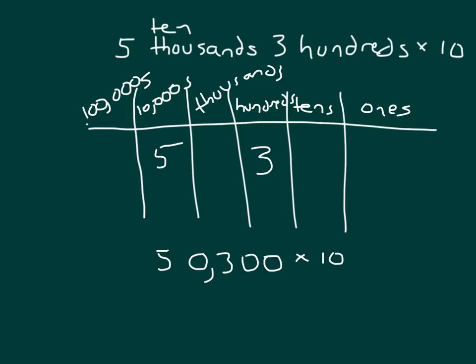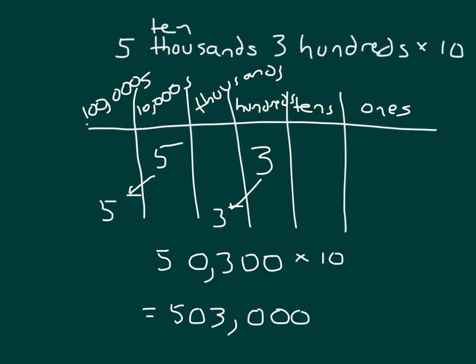Will the number get bigger or smaller if we're multiplying by ten? Yes, the number gets bigger. The digits shift one place to the left to get larger. So those five ten-thousands are now worth five hundred-thousands. Let's shift both of those digits. The new number is 503,000. Carefully placing the comma: fifty thousand three hundred times ten equals five hundred three thousand.